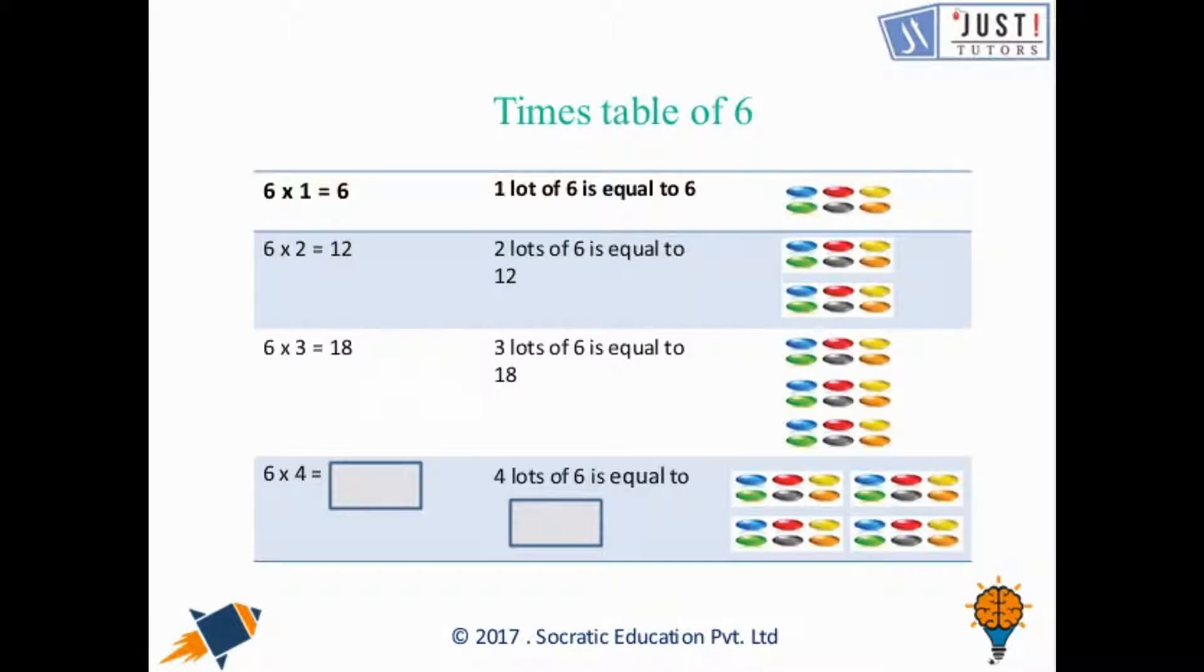Now let us talk about times table of 6. 6 times 1 is equal to 6. One lot of 6 is equal to 6 as you can see the depiction in this picture here. Now 6 times 2 is equal to 12. That is 2 lots of 6 is equal to 12. Now talking about 6 times 3 we have 18, and now 6 times 4, as you can see here the pattern that is adding 6 each and every time. So 4 lots of 6 or 6 times 4 will be equal to 24. Let us just write down the answer in the given boxes.